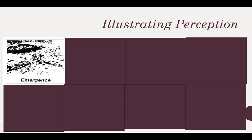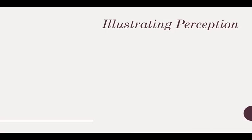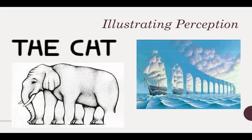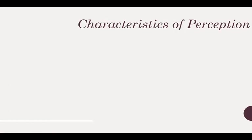Even if you didn't see the dog right away, you wanted to say, 'I see something in there — I see something I recognize. I see a tree, I see a park.' The really powerful thing about perception is that it is a meaning-making process. We want to understand the stimuli that we perceive.